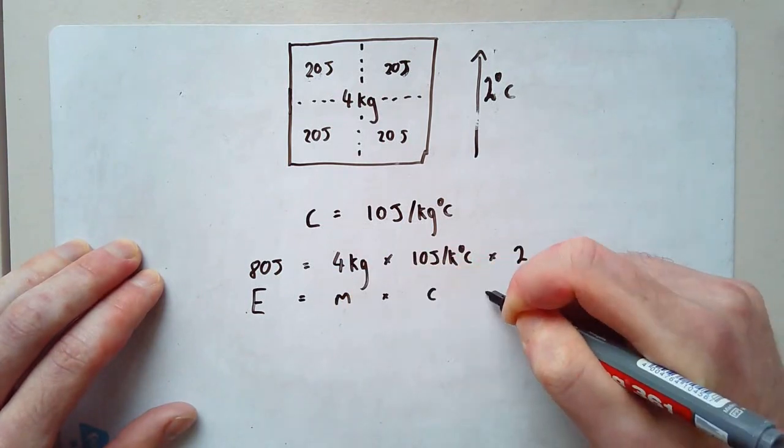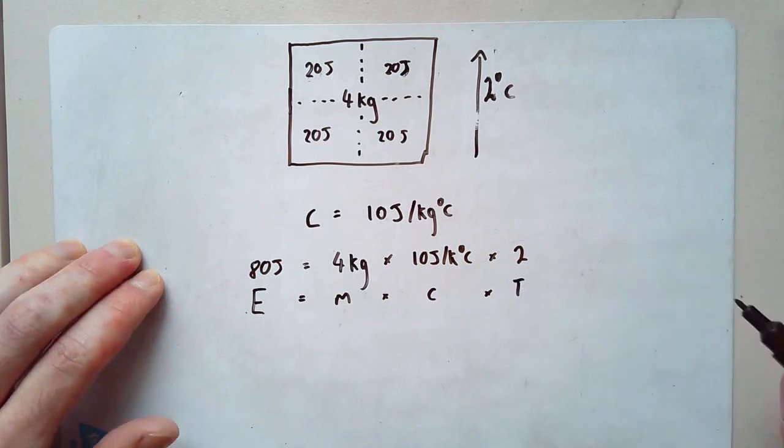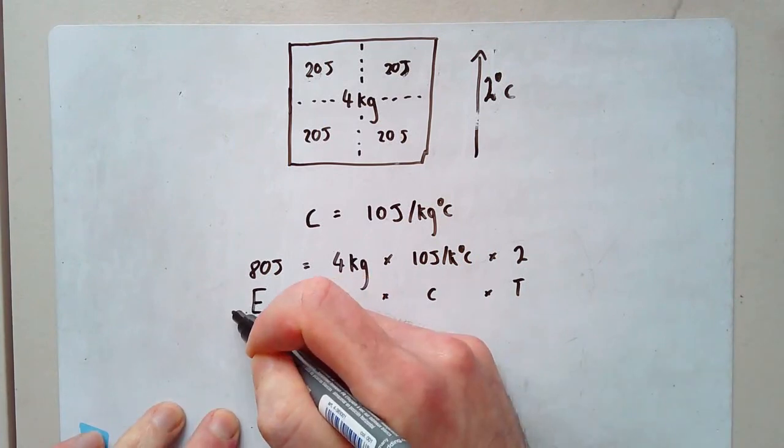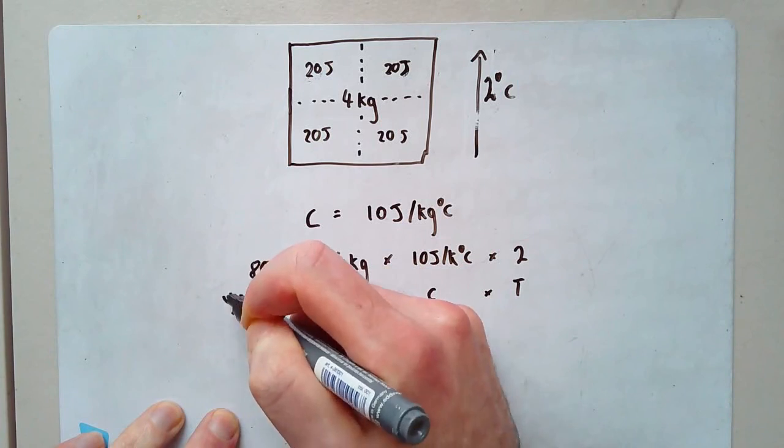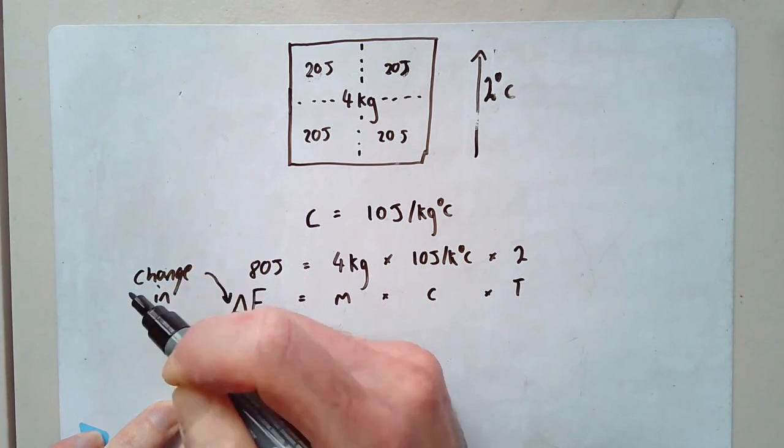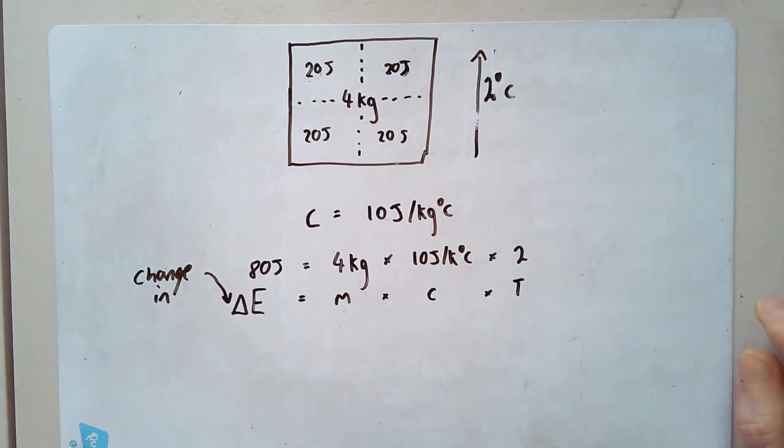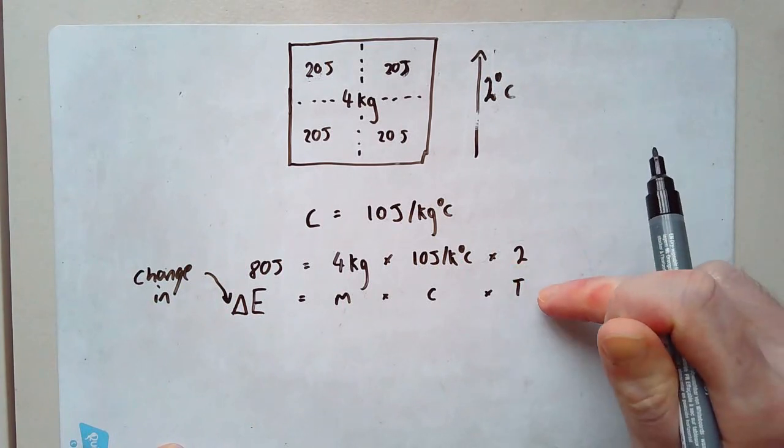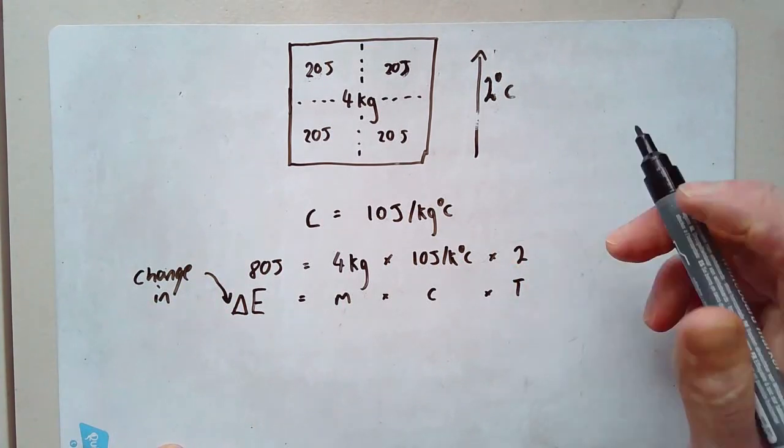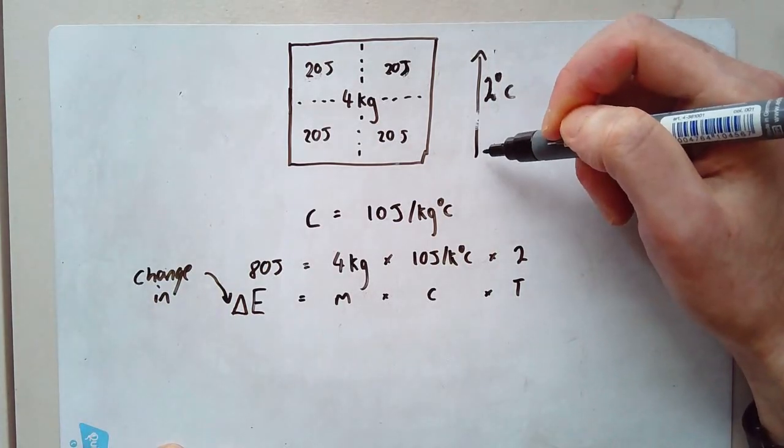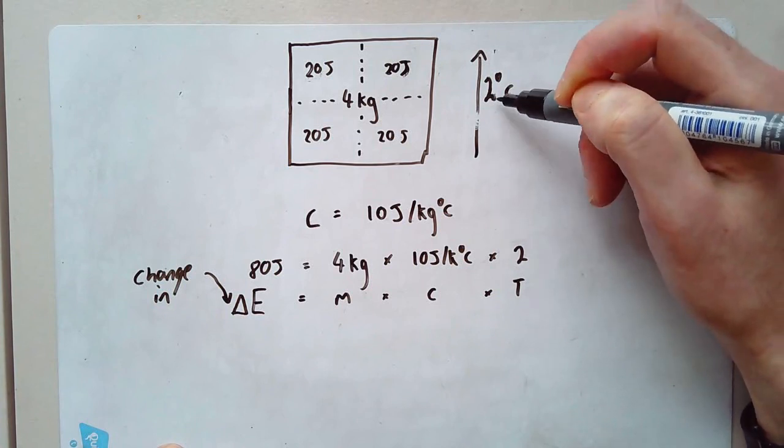Now we could write that as an equation, as E equals M times C times T. However, we don't want to make things too easy for you, and there are two further complications. In this particular equation, we put a little triangle in front of the E, because this stands for change in. So it's about the change in energy. So it's about the energy that you need to put in. We'd also need to do the same thing for T, because I'm not interested in what its actual temperature is. I'm interested in how much it's changed. You see here when I said it goes up by two degrees. Well, I could have started at 80 degrees. It could have started at 200 degrees. It doesn't really matter. I'm trying to get it up by two degrees. So it's the temperature change that's important. So we'd put another triangle in there.